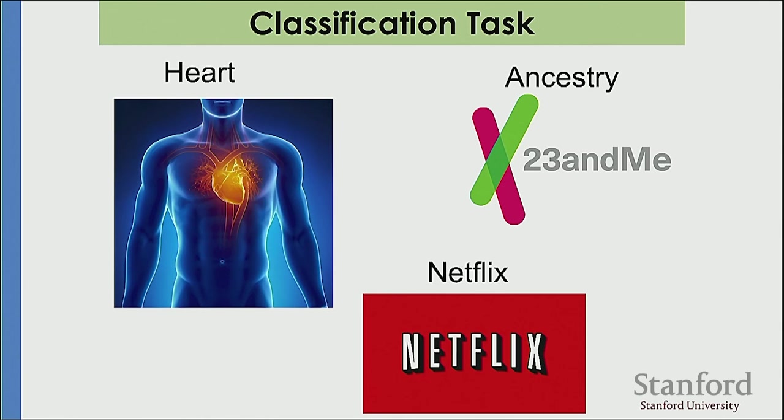For example: one or zero, will somebody have a healthy heart; one or zero, will somebody like a movie; or one or zero, is somebody coming from a particular ancestry.